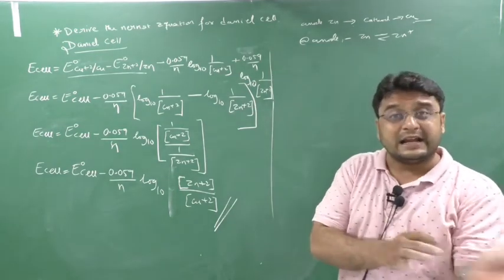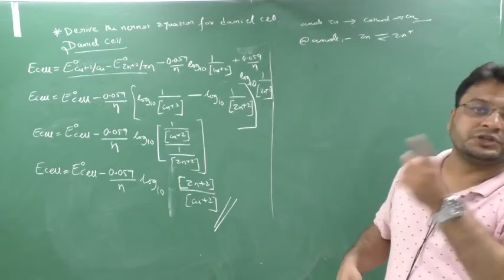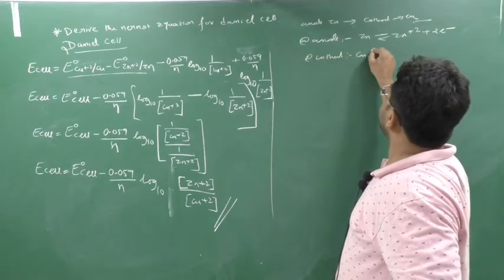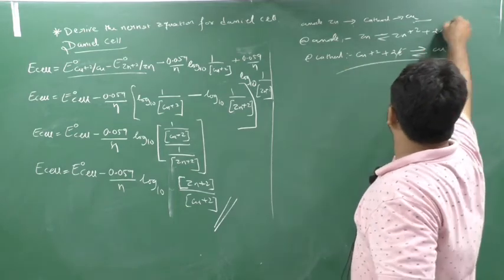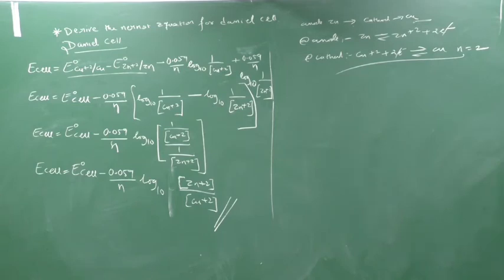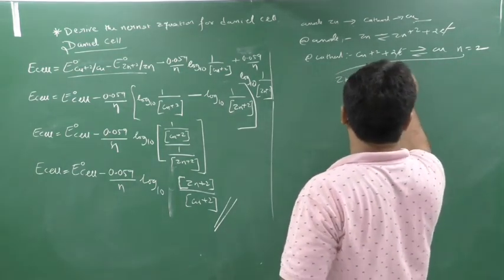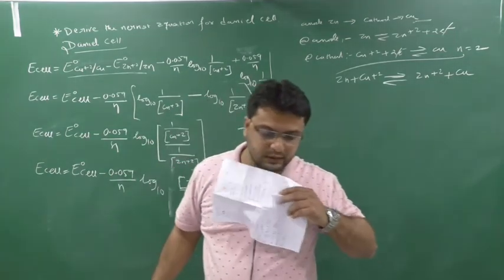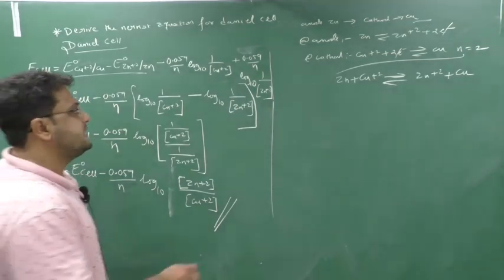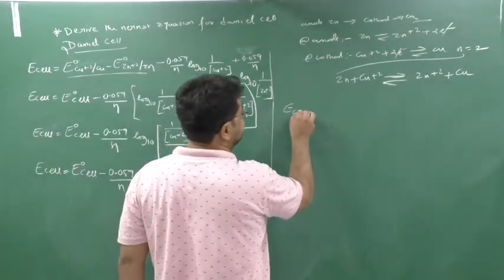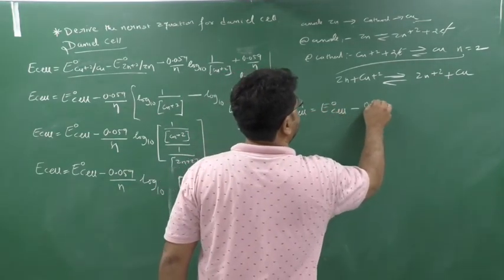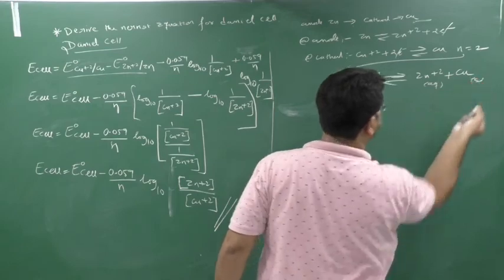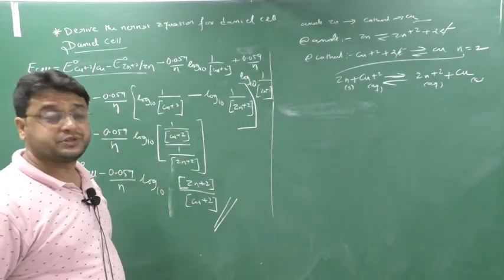The net reaction for Daniel cell: Zn + Cu²⁺ → Zn²⁺ + Cu. Products are Zn²⁺ (aqueous) and Cu solid; reactants are Zn solid and Cu²⁺ (aqueous). Concentration of Cu solid = 1 (solid, unity). Concentration of Zn solid = 1 (solid, unity). So: E cell = E° cell − (0.059/n) × log₁₀([Zn²⁺]/[Cu²⁺]). This matches the derived equation. For derivation, use reduction reactions; for directly writing, use the net reaction.